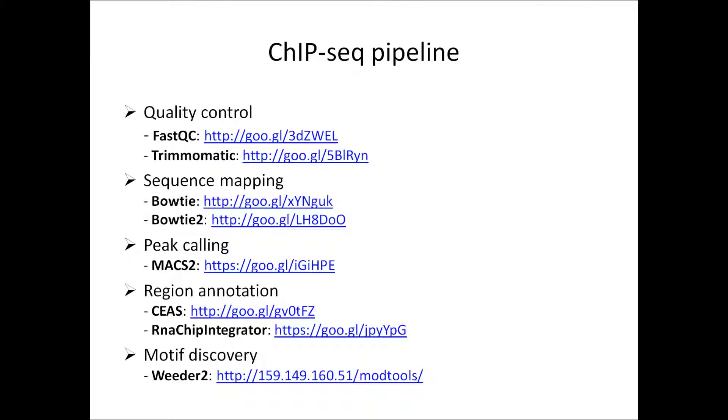Once we have a set of binding regions it's of interest to know something about them. For example CEAS, the cis-element annotation system, provides statistics about where those binding regions are in relation to genomic features, in particular genes. It will tell you whether there is an enrichment of binding regions in promoter regions compared to the genomic background. RNA ChIP integrator, which is software developed by our group, is able to give specific information about the closest features to each binding region. This is particularly useful if you want to know what the closest genes are to each binding region.